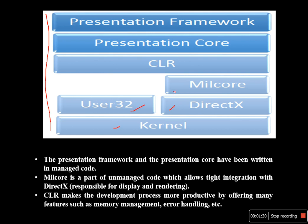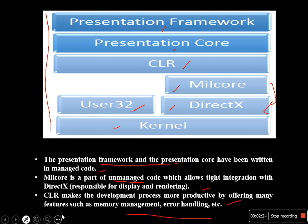The WPF architecture includes User32, DirectX, the MIL core, the CLR, and the Presentation Core. If you have a MIL core, you can display the same code. This MIL core is a DirectX component. If you have a CLR, you can deploy the CLR and use error handling.